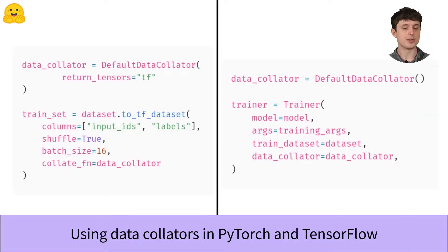In TensorFlow, it's a bit different. The easiest way to use a data collator is to pass it to the to_tf_dataset method of your dataset. This will give you a TensorFlow tf.data.Dataset that you can then pass to model.fit. You'll see these approaches used in the examples and notebooks throughout this course.